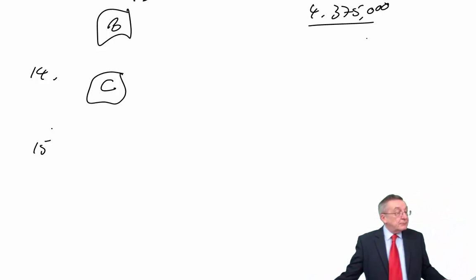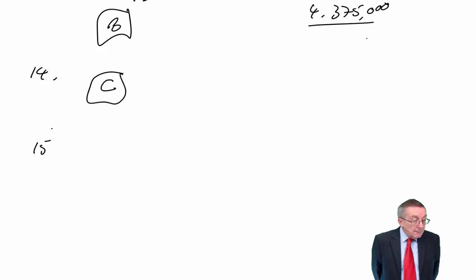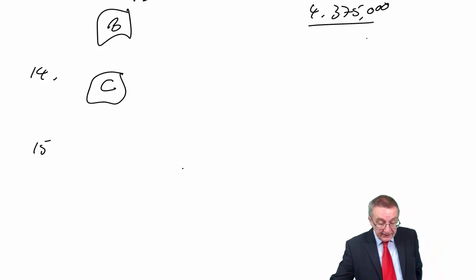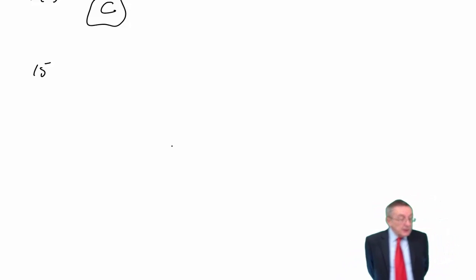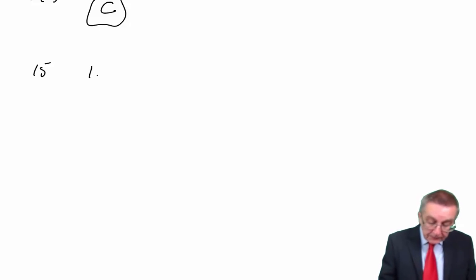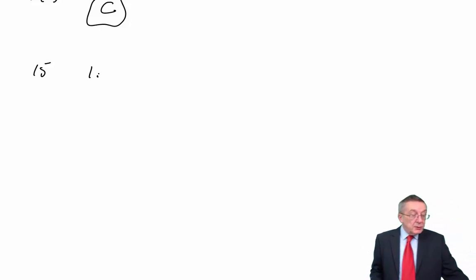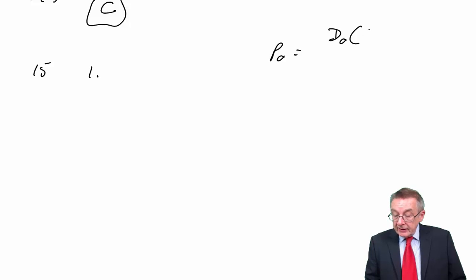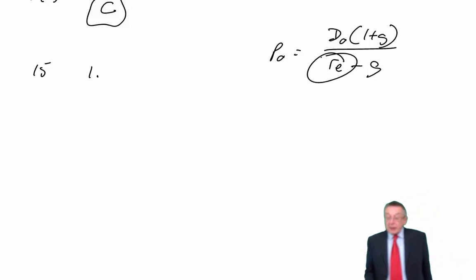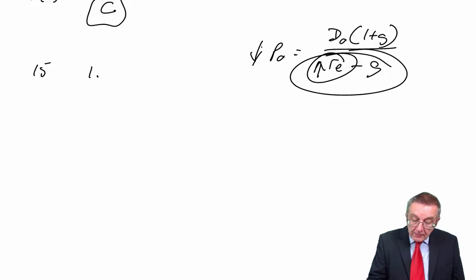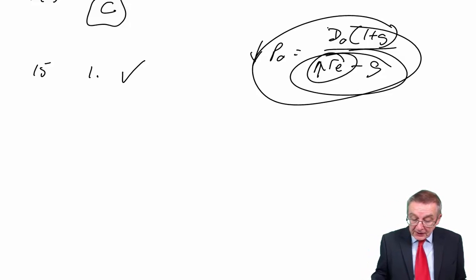Fifteen. Yet another one. There's very little actual arithmetic in Section A of this exam. Which of the following statements is now correct? Number one, an increase in the cost of equity leads to a falling share price. Yes. If you look at the first formula on the formula sheet, the market value P0, dividend times 1+G over RE-G. Well, if the cost of equity goes up, you end up with a bigger number on the bottom. And if you're dividing by a bigger number, the market value will go down. So number one is correct.